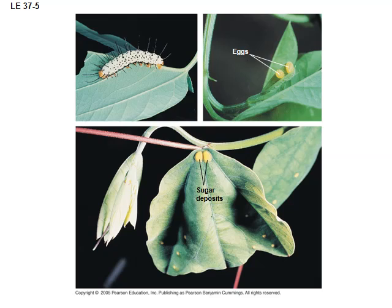An example: this plant is poisonous, but this caterpillar can eat it. So the plant started producing sugar deposits that would feed the predators of the caterpillar — feeding those predators with sugar to encourage them to come and prey on the caterpillar.